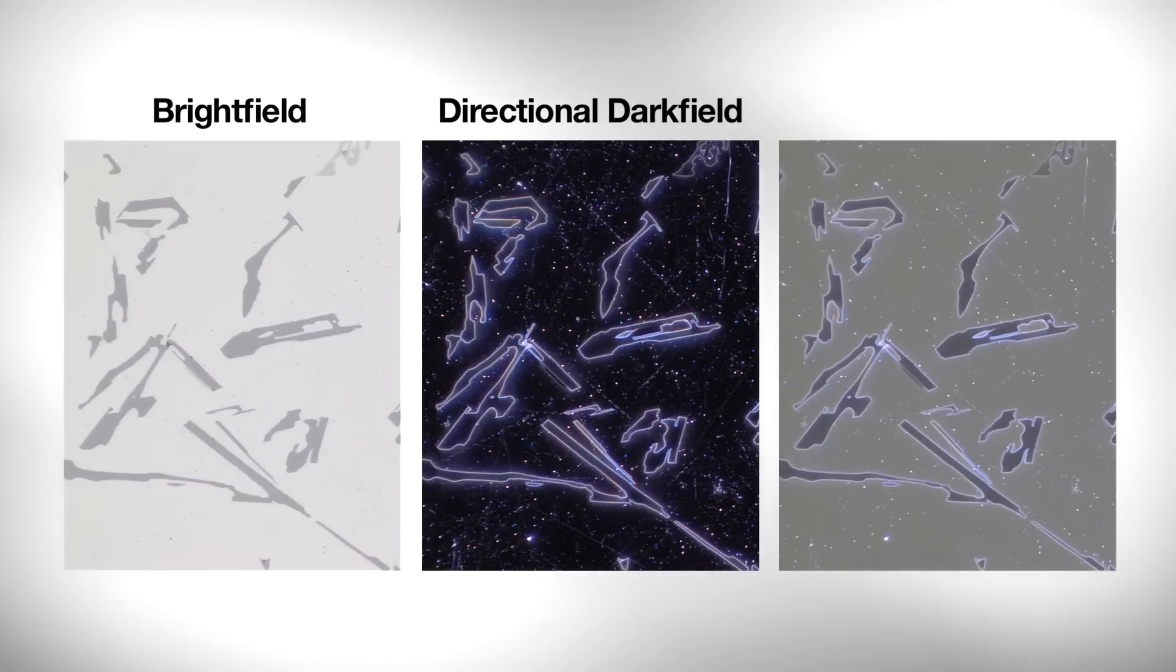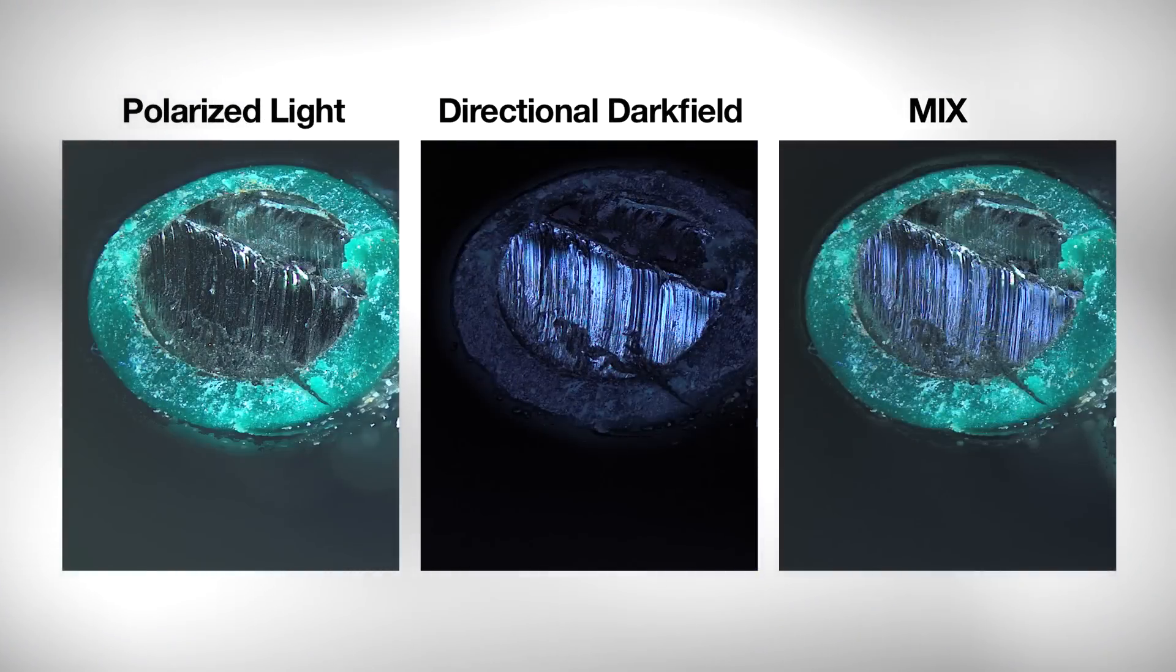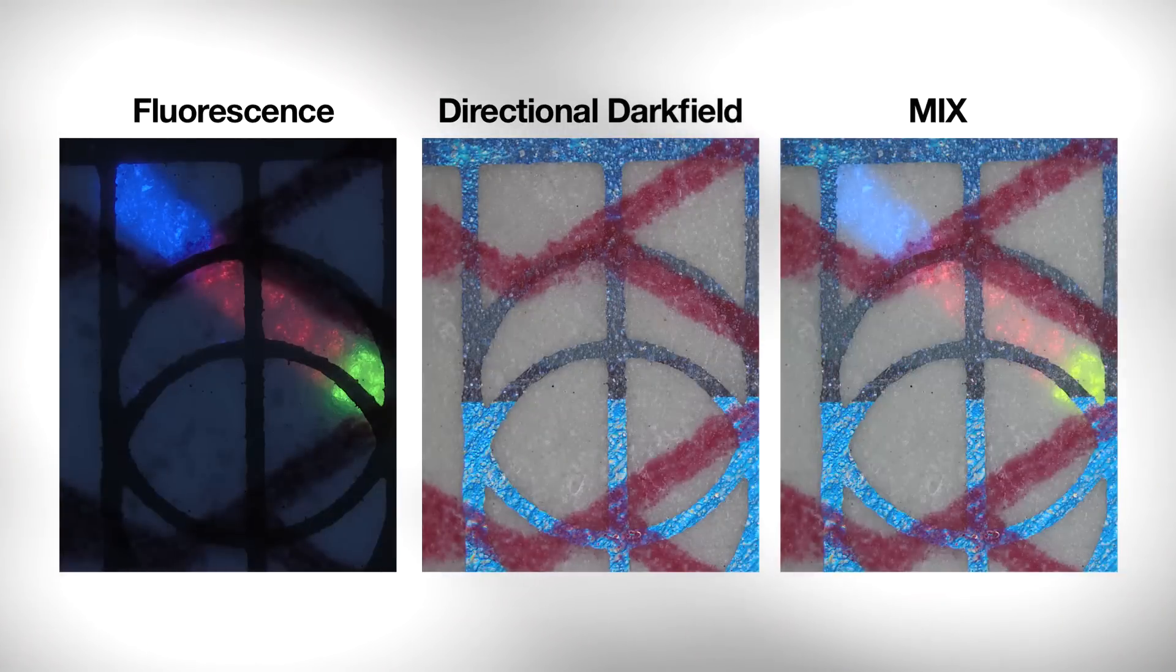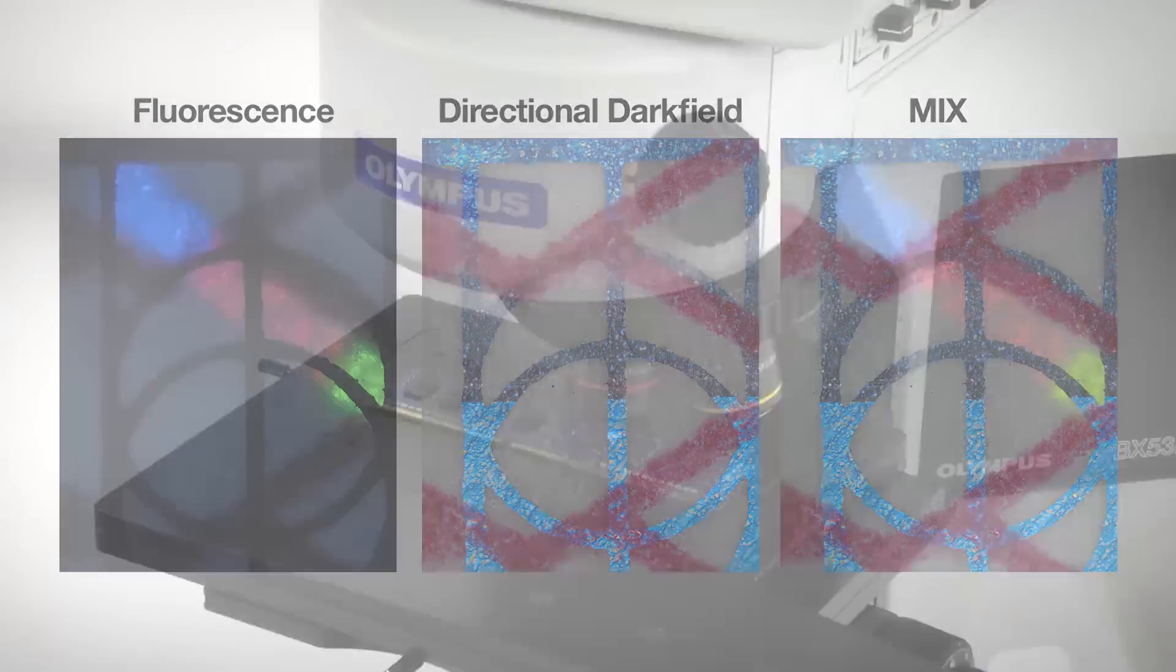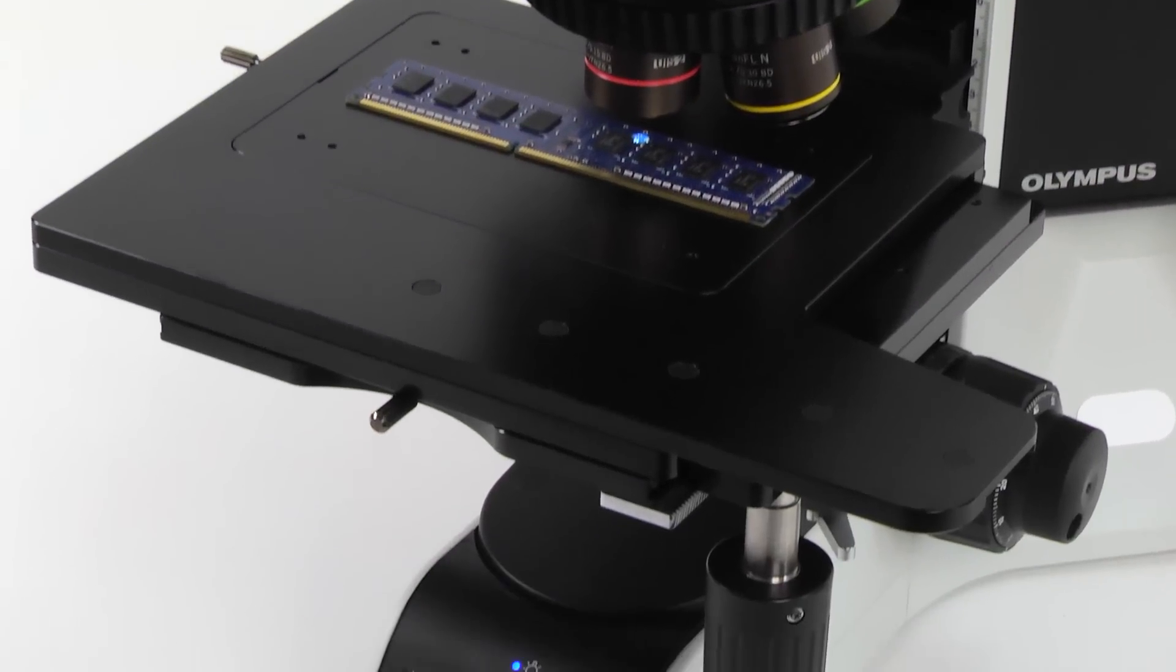Directional dark field can also be combined with other optical techniques, creating mix illumination. This flexibility allows you to see features and structures of your sample that are traditionally difficult to detect with a single observation method.